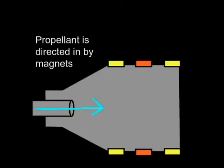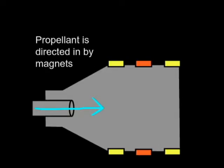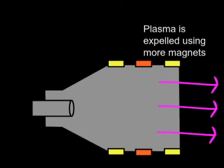Next up are electrothermal drives. These are the most analogous to a conventional rocket. The drive works by accelerating gas into a reaction chamber, where electricity heats it to the state of plasma. Magnets then accelerate the plasma out to propel the ship forward.